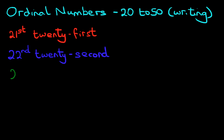Now we move to the next one. Twenty-third. Again, the twenty remains the same. And here we write down twenty-third. Third. That's how we spell third.